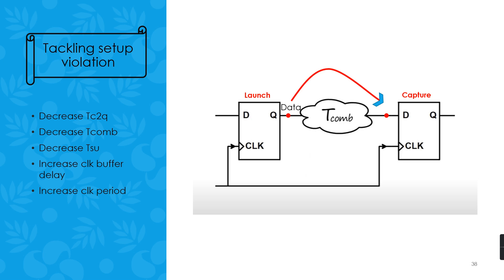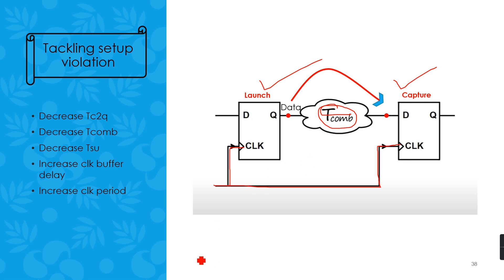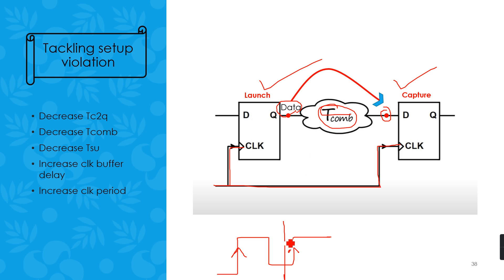In the last video, we were dealing with a circuit that had a launch flip-flop, a capture flip-flop, and some combinational logic in between them, with the entire circuit synchronized with the clock signal. In setup analysis, our main objective was to make sure that on the rising edge of the clock, the data at the output of the launch flip-flop becomes stable and reaches the input of the capture flip-flop at least before the setup time with respect to the next active edge of the clock.